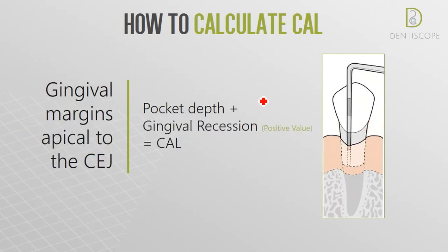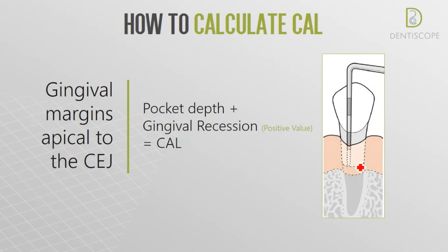For the second case, we have the gingival margin lying apical to the cemento-enamel junction — in this case we have a recession. After we take the pocket depth, we also have to take the gingival recession and add them together; that will give us the clinical attachment loss. We can measure from the cemento-enamel junction all the way to the depth of the pocket.